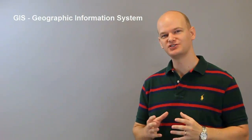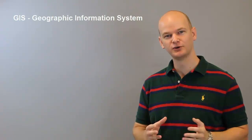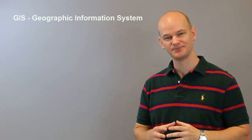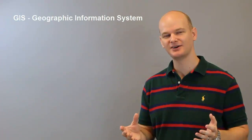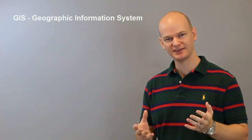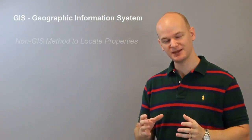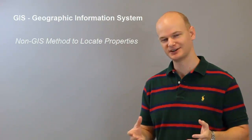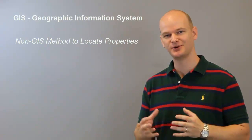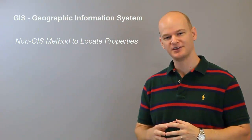Before we start talking about GIS, let's talk about the old school method of doing it — the method that is still used in many counties. When you have a tax list, you'll have a legal description that basically tells you where the property is. But unless you're a genius, you won't know exactly where that property is without further research.